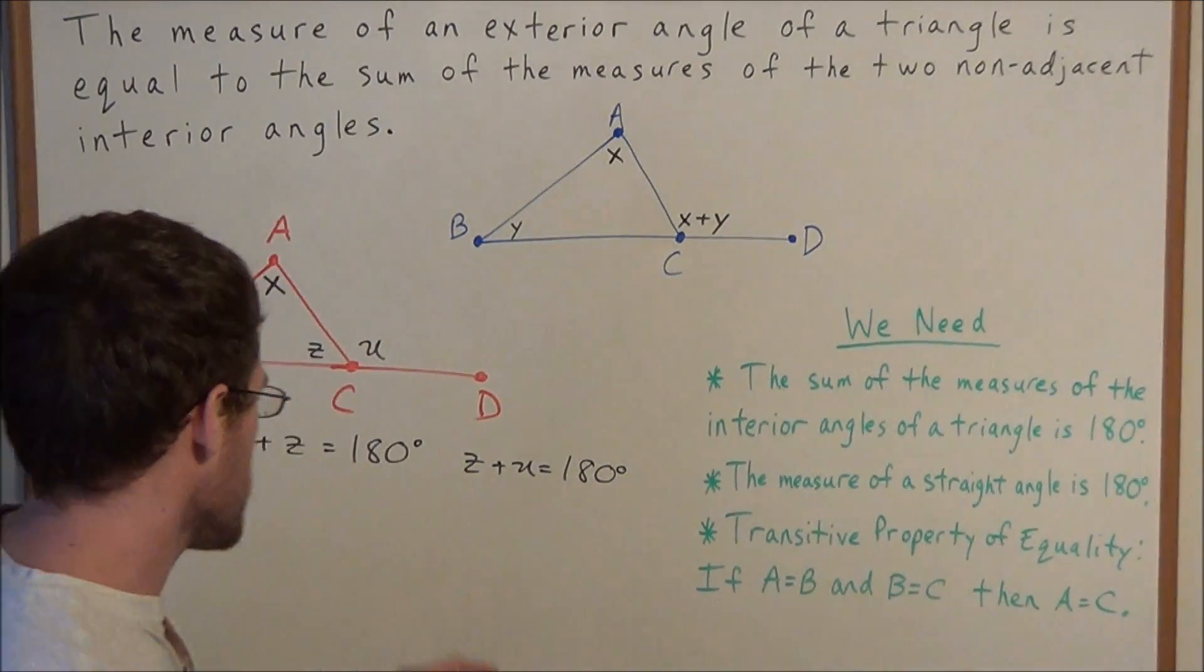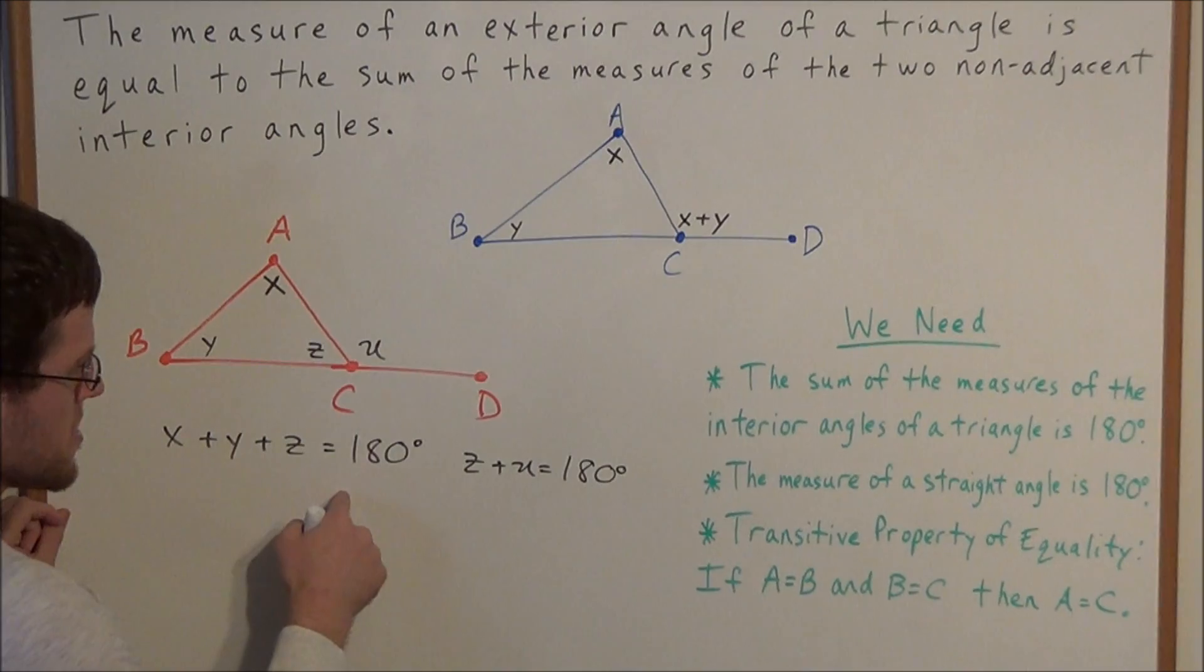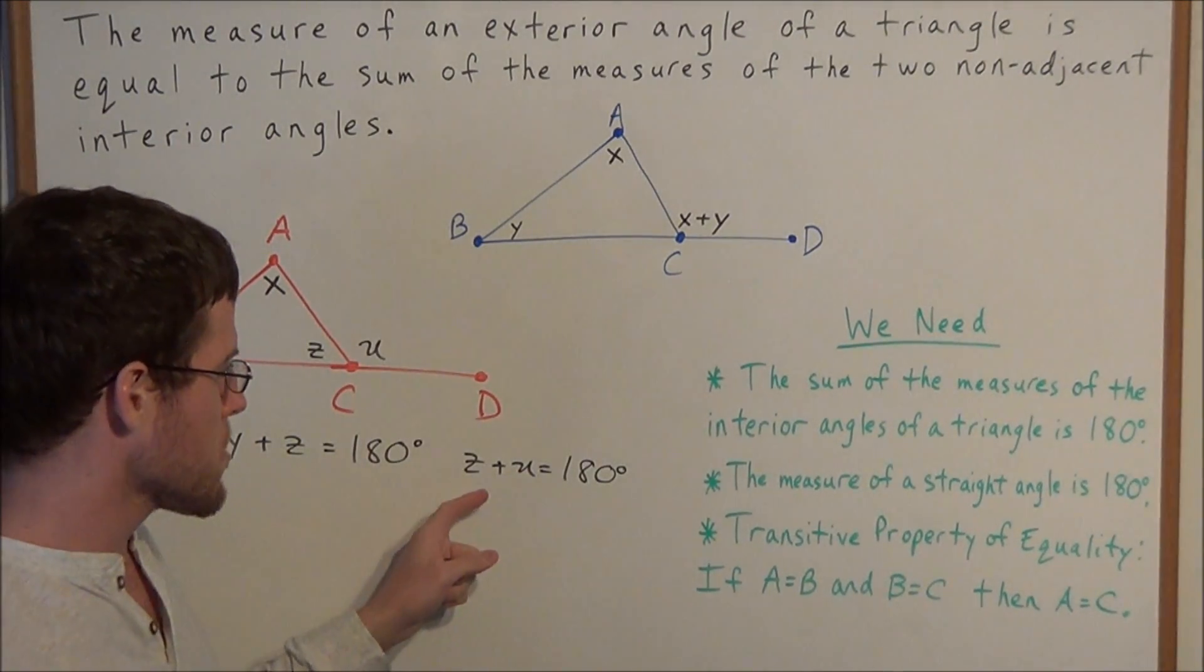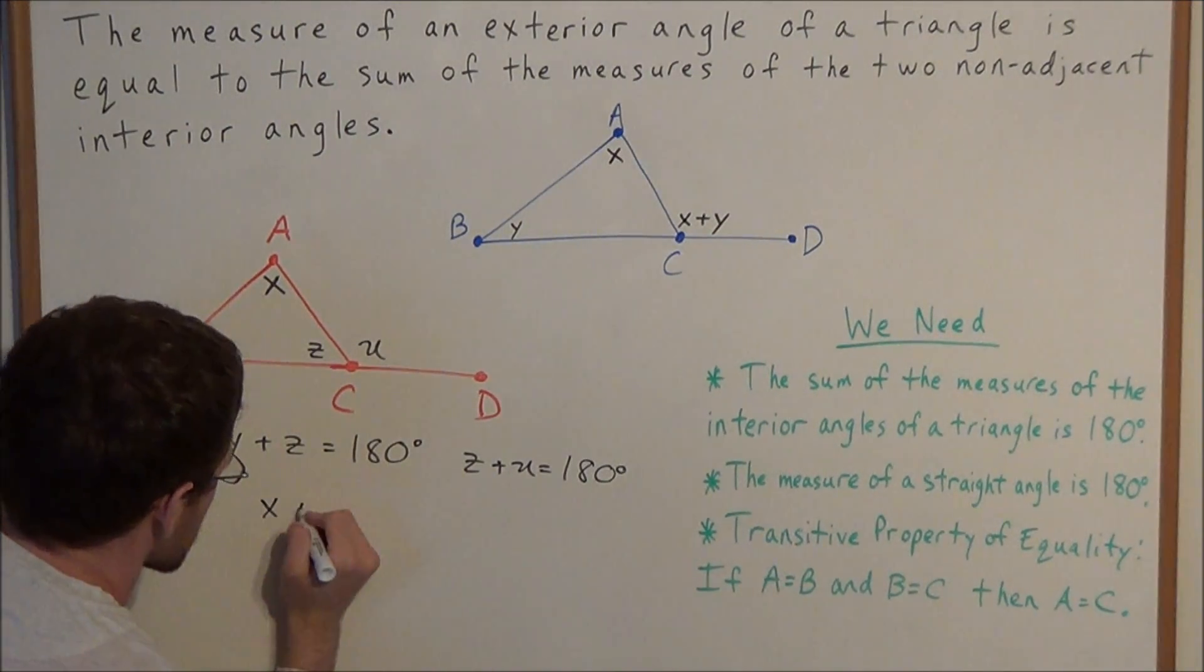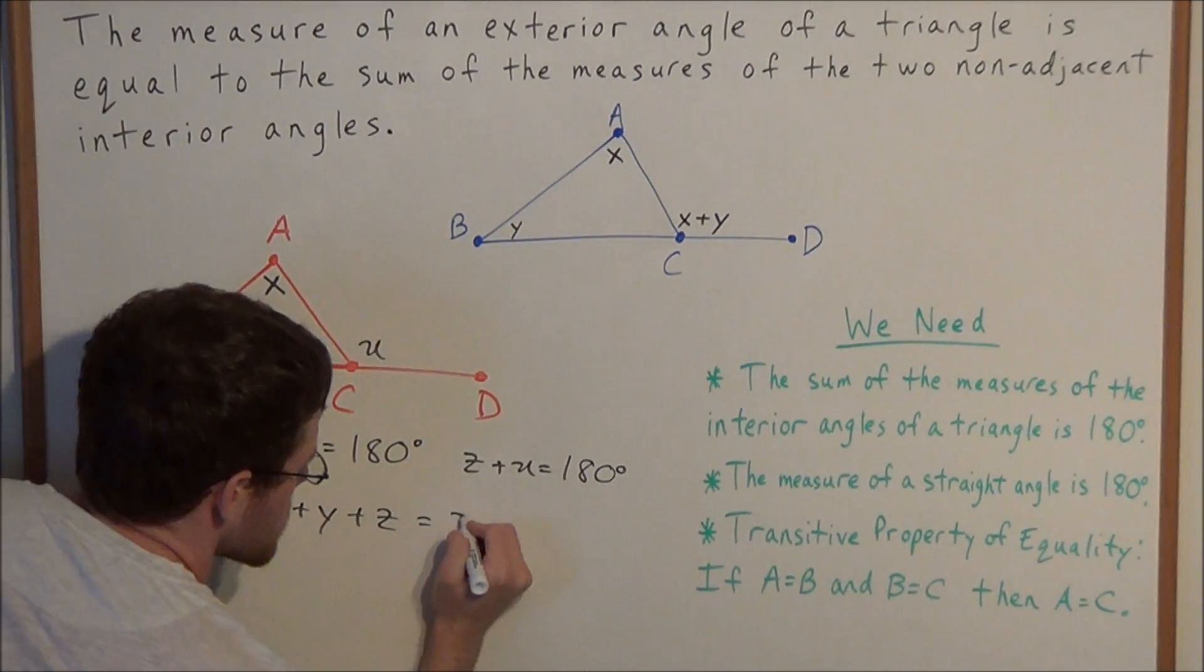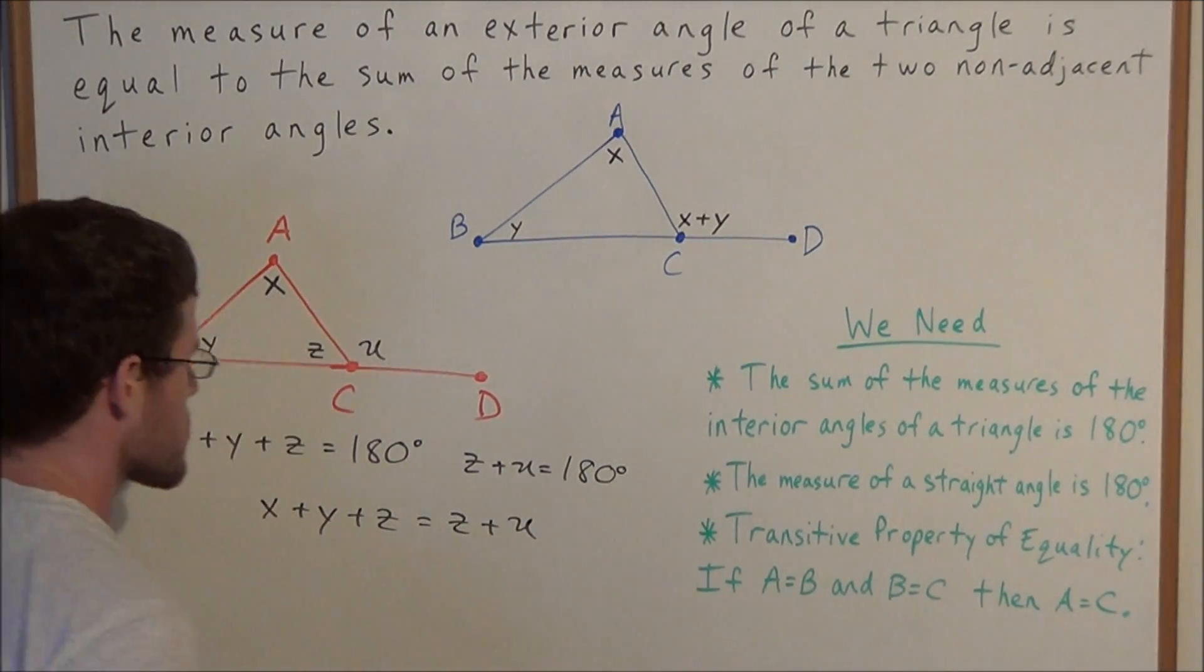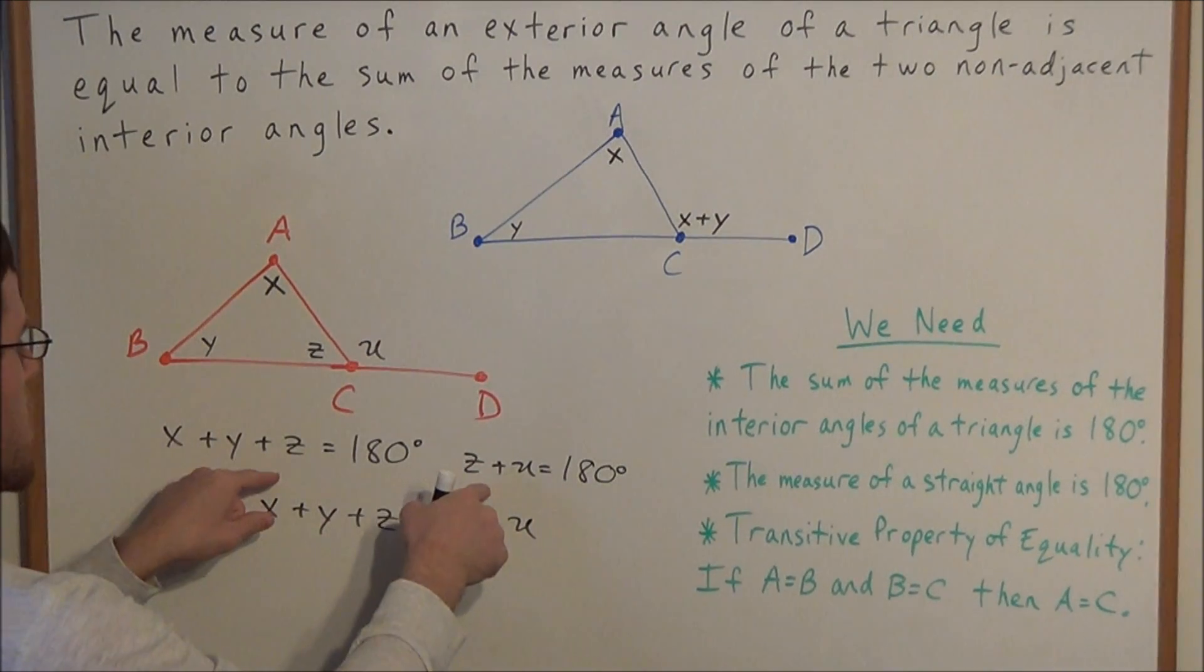If we apply that to these two equations, we have X plus Y plus Z equals 180 degrees, and we also have Z plus U equals 180 degrees, which allows us to say X plus Y plus Z equals Z plus U. Since both of these quantities sum to 180 degrees, then those two quantities must be equal.